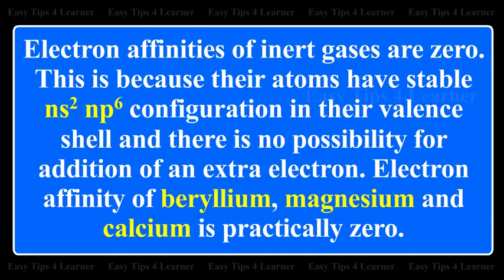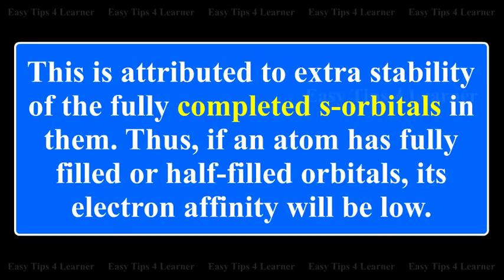The electron affinity of beryllium, magnesium, and calcium is practically zero. This is attributed to the extra stability of the fully completed S orbitals in them. Thus, if an atom has fully filled or half-filled orbitals, its electron affinity will be low.